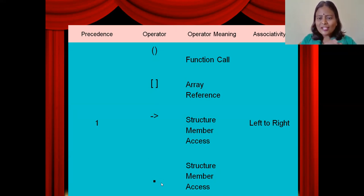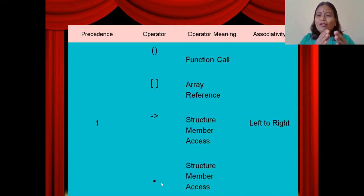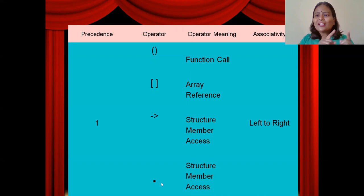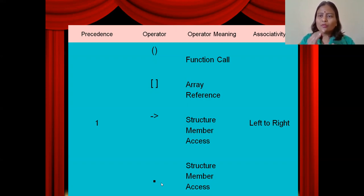And associativity: when these all are having equal precedence and happen to occur in the same expression, then how does it evaluate? The order of evaluation is left to right. By example you will come to know — just be aware of this theoretical explanation. Then during example discussion, you may be much more aware.